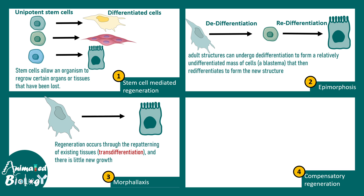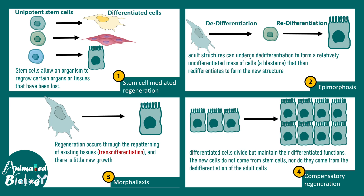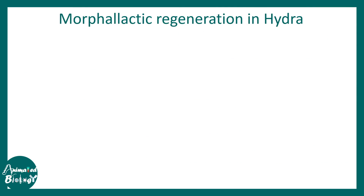In morphallaxis, trans-differentiation happens — one mature body cell becomes another mature cell type. Both morphallaxis and epimorphosis can be seen as underlying mechanisms of regeneration in Hydra, and we have to appreciate that in the subsequent discussion.